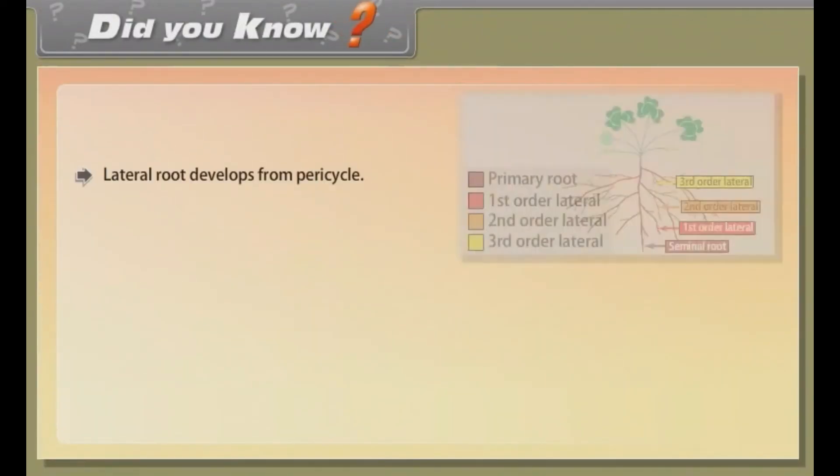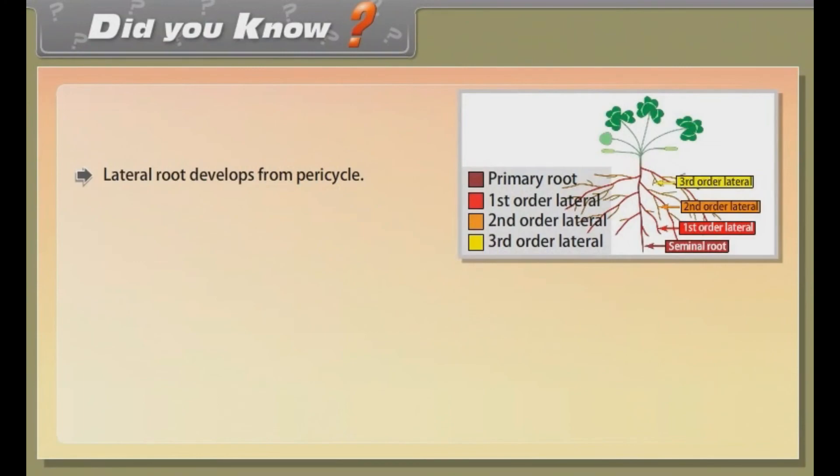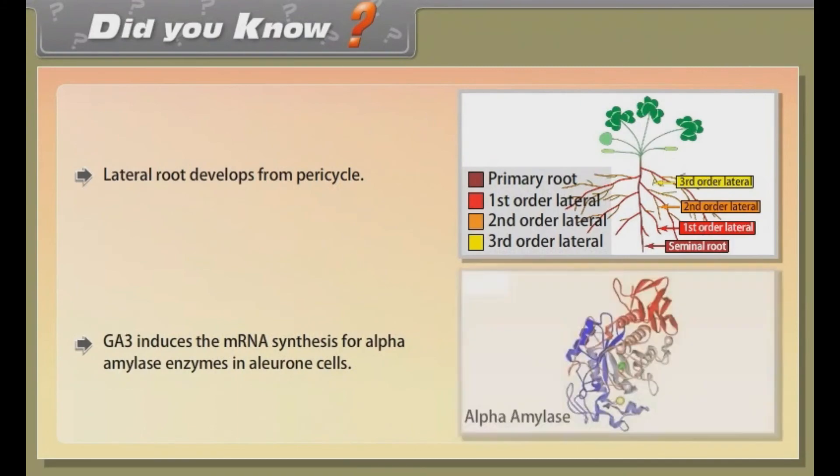Did you know: lateral root develops from pericycle. GA3 induces the mRNA synthesis for alpha amylase enzymes in aleurone cells.